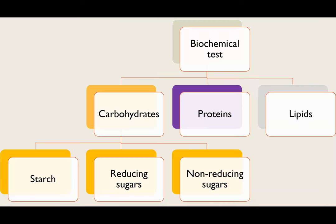The biochemical tests you need to know are linked to looking for the presence of three different types of carbohydrates, proteins, and lipids. For carbohydrates, there's only one polysaccharide test you need to know, and that is for starch. The reducing sugars test you would have learned at GCSE, but this time we go into the details of why it's called a reducing sugar, and also cover the non-reducing sugars test, which will be new.